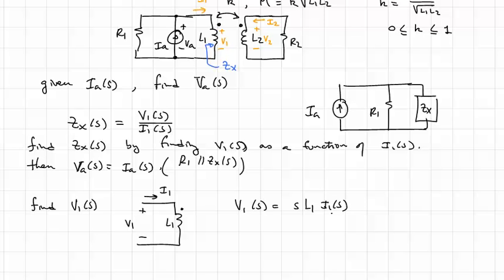That's just L1 di dt, di1 dt. But because there's mutual inductance here, mutual inductance and a coupling coefficient k, we have a second term here. There's voltage induced on winding 1 due to current in winding 2.